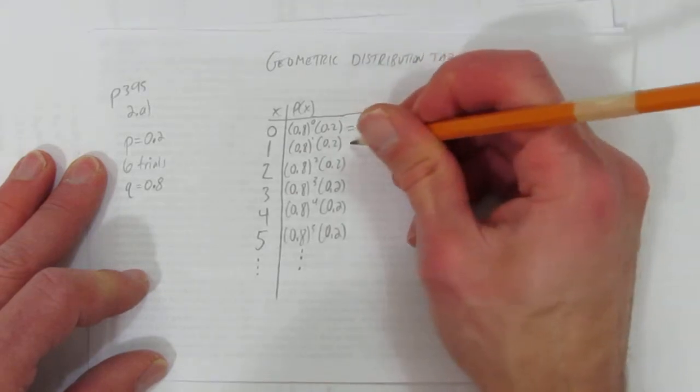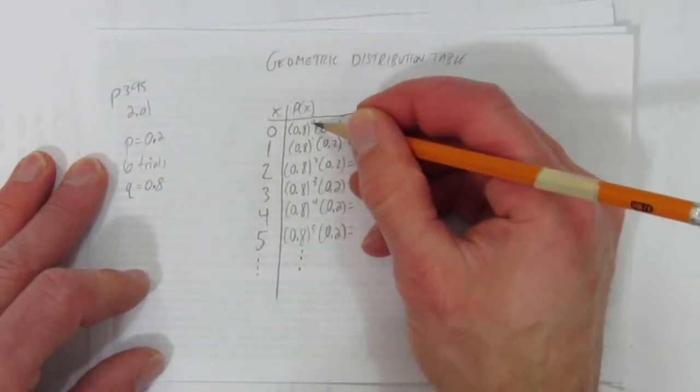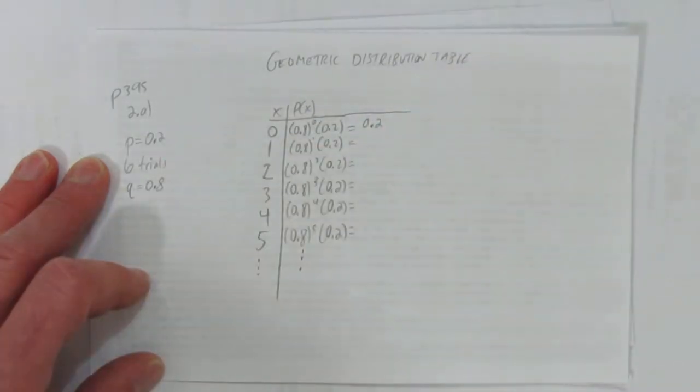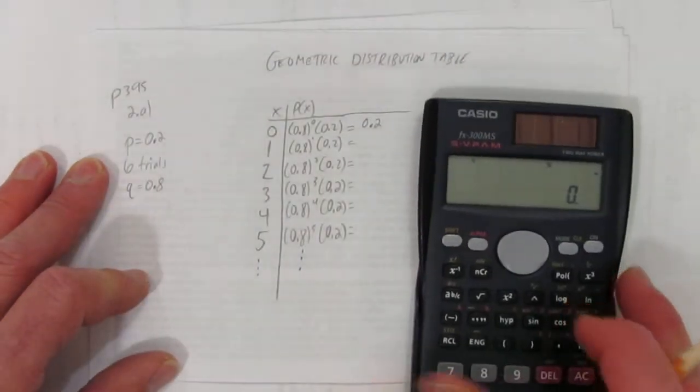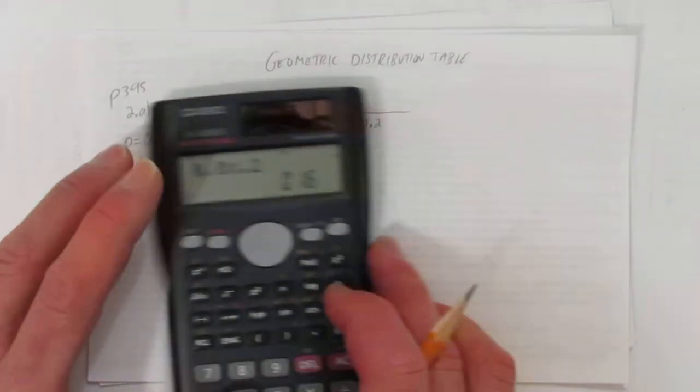Let's calculate. We'll do them one by one. The first one is just, well, what's 0.8 to the power of 0 is just 1. So what's 1 times 0.2? Just 0.2. That's easy. The next one is just 0.8 times 0.2. And you get 0.16.